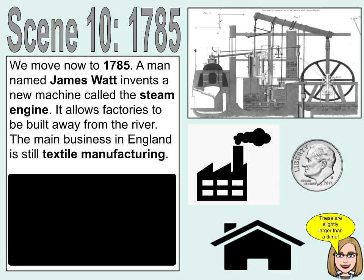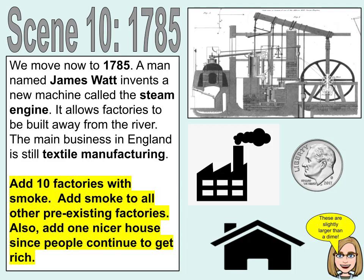Scene 10. We move now to 1785. A man named James Watt invents a new machine called the steam engine. It allows factories to be built away from the river. The main business in England is still textile manufacturing. Add 10 factories with smoke. Add smoke to all other pre-existing factories. Also, add one nicer house since people continue to get rich.